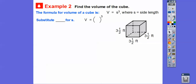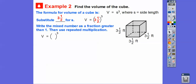Let's substitute 3 and 1/2 feet in for S. The formula for the volume of a cube is volume equals S cubed. First, we convert the mixed number to a fraction greater than 1: 2 times 3 is 6, and 6 plus 1 is 7, so 3 and 1/2 becomes 7/2. Then we use repeated multiplication: 7/2 cubed.